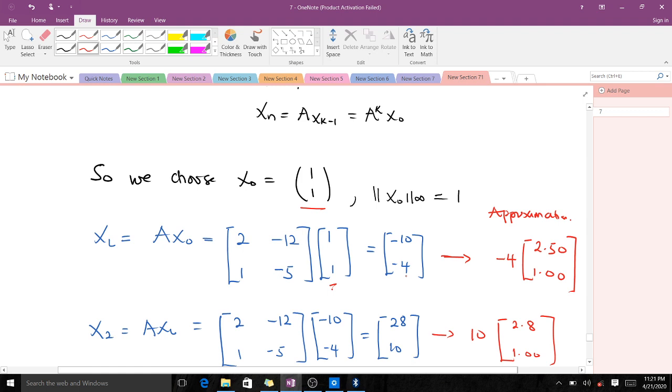The scaling makes the bottom element 1 in all our iterations. To do that, we factorize -4 out. We get -4(2.5, 1.0), which equals (-10, -4). This vector (2.5, 1.0) becomes the approximated eigenvector after the first iteration.